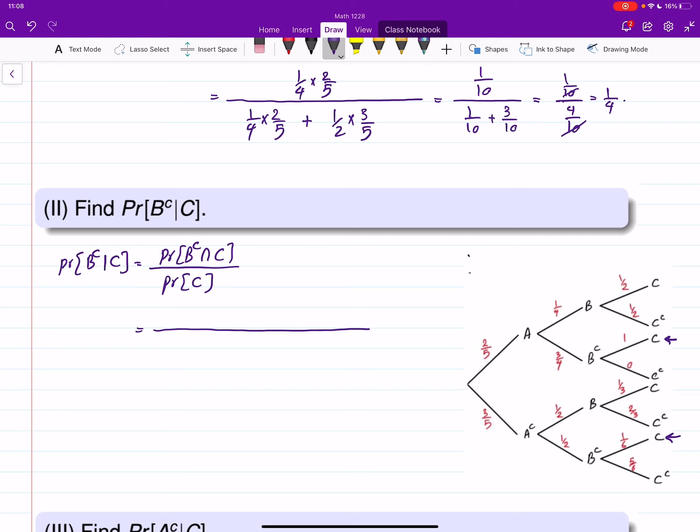So I find probability of each one. The first one gives me 1 times 1 over 4 times 2 over 5 plus the second one gives me 1 over 6 times 1 over 2 times 3 over 5. I'm calculating probability of a path. So those are two paths which give me the probability of intersection of B complement and C. How about probability of C?